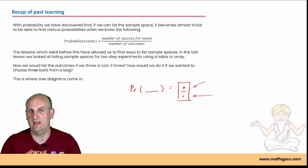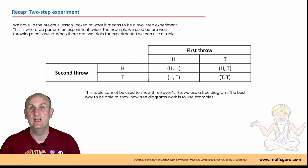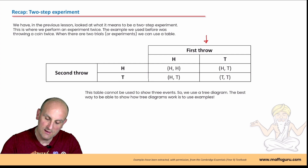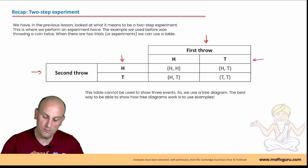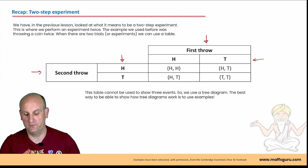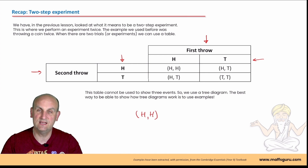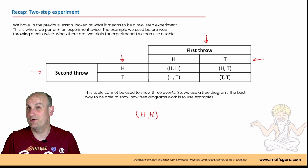What if we want to show all the different outcomes in a different way? In the previous video we looked at two-step experiments using tables or an array. So if we had two coins we could show it pictorially where the first throw was our columns and the second throw was our rows. Outcomes like H,H meant the first throw was a head and the second throw was a head. This is great — it shows all the information — but is there another way of doing it?